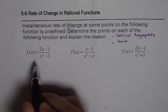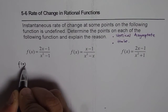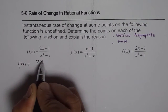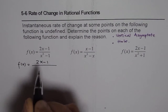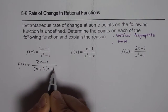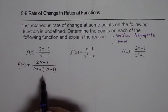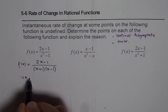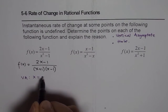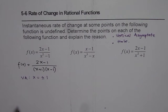The very first one we can write in factored form as f(x) equals (2x minus 1) over (x² minus 1), which can be written as (x plus 1) times (x minus 1). So this equation has two vertical asymptotes at x equals plus and minus 1. These are the points where we cannot have instantaneous rate of change.